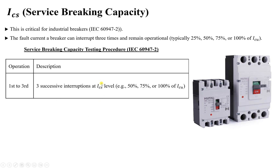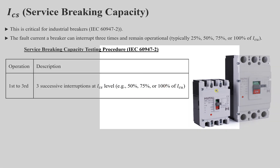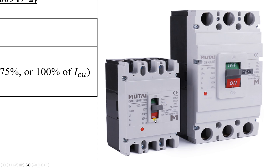After those faults, they also test dielectric strength by applying an overvoltage. Looking at this breaker, you can see ICU is 50 kilo-ampere — the maximum fault current it can interrupt without damage, at most once. ICS is 35 kilo-ampere, which is less than ICU, and represents the service breaking capacity. This means the breaker can interrupt 35 kilo-ampere several times, at least three times according to the testing procedure.